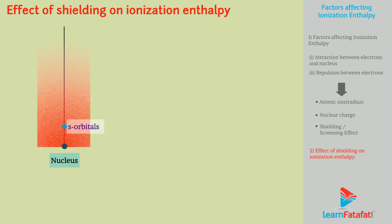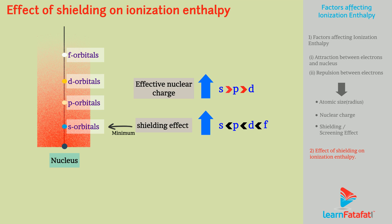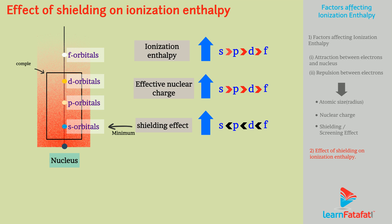Since S orbitals of respective sub-shells are found nearer to the nucleus than other orbitals, shielding effect on S orbital is minimum and it increases in the order: S < P < D < F. In other words, the effective nuclear charge increases in the order: S > P > D > F. If previous orbitals are completely filled, then the shielding is more powerful and so ionization enthalpy will be less.